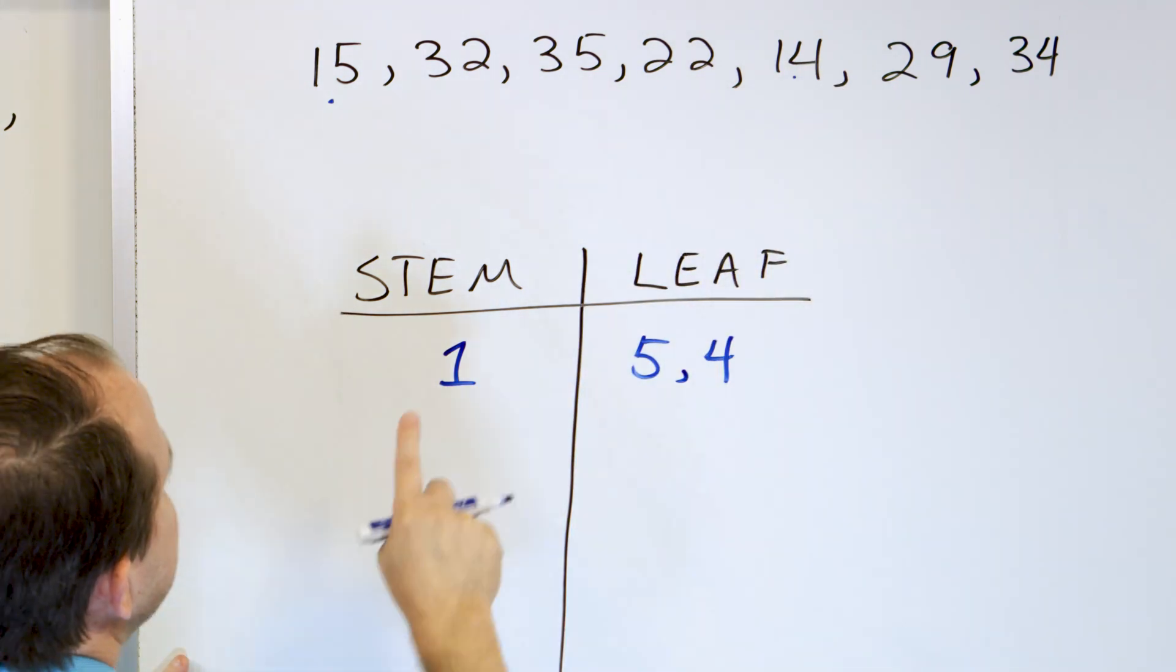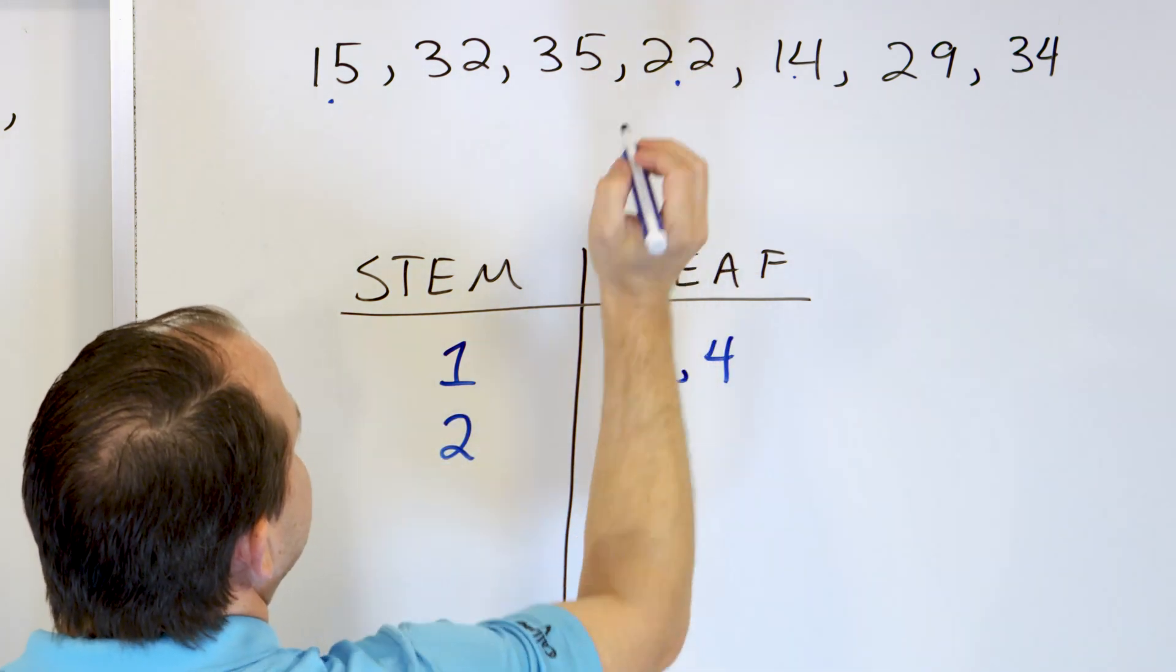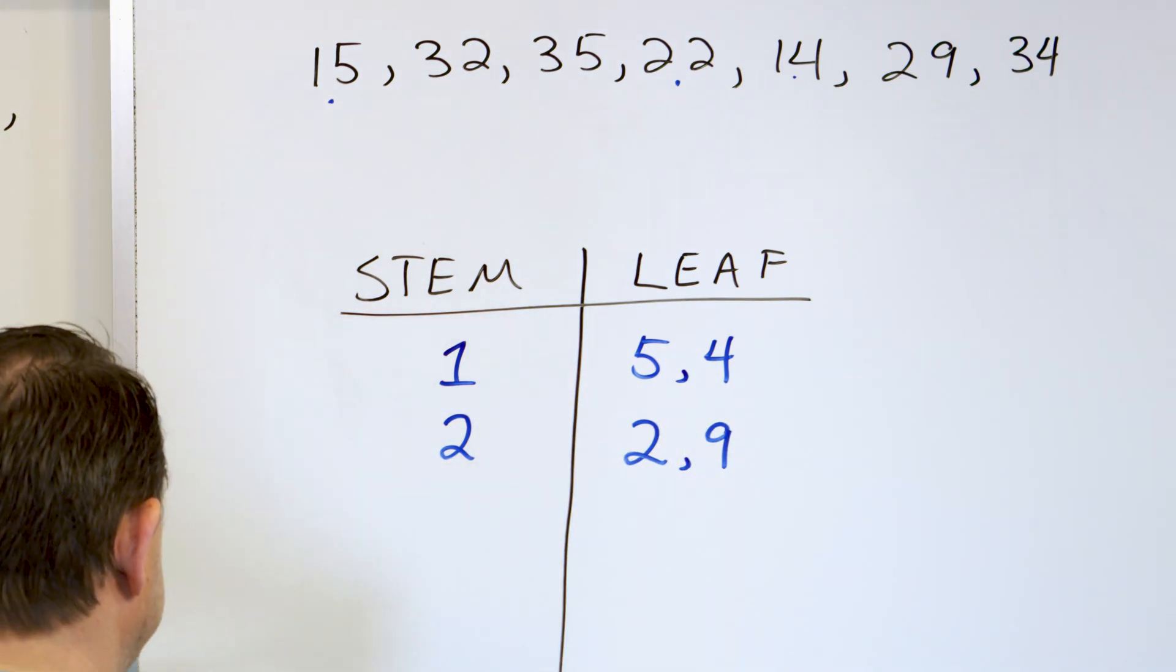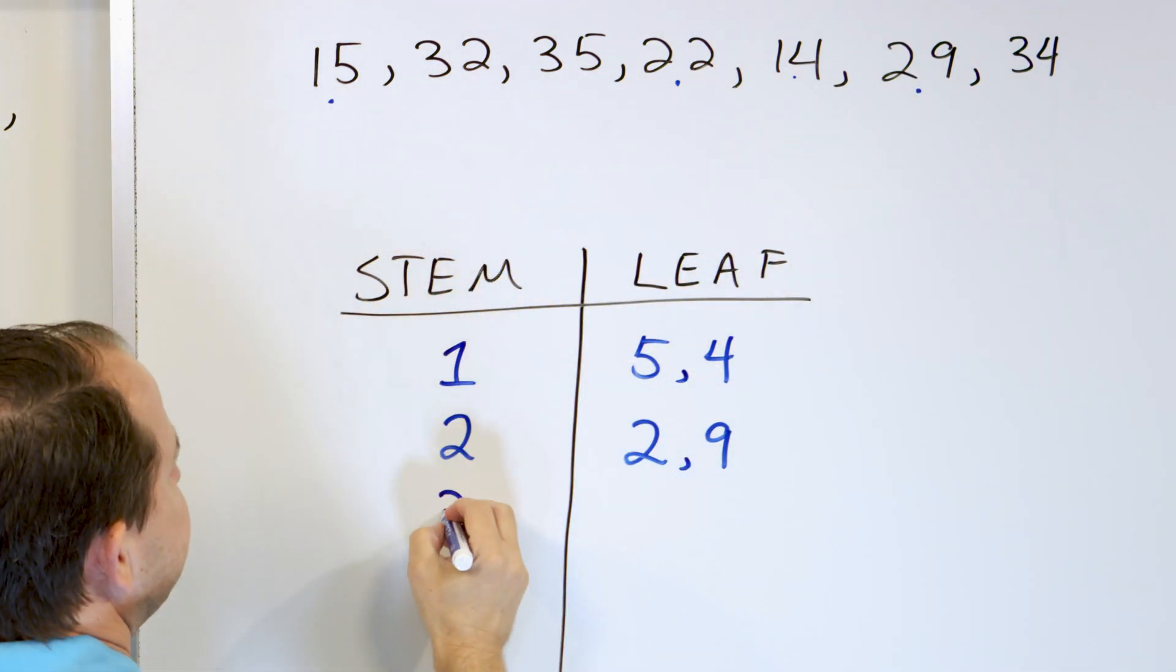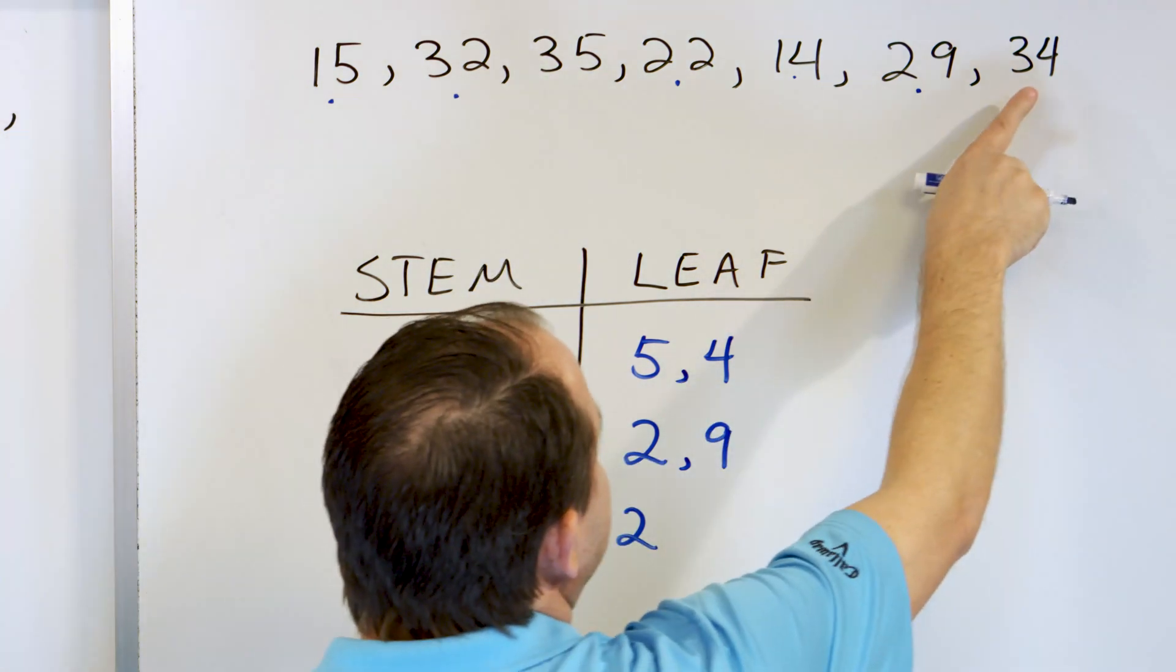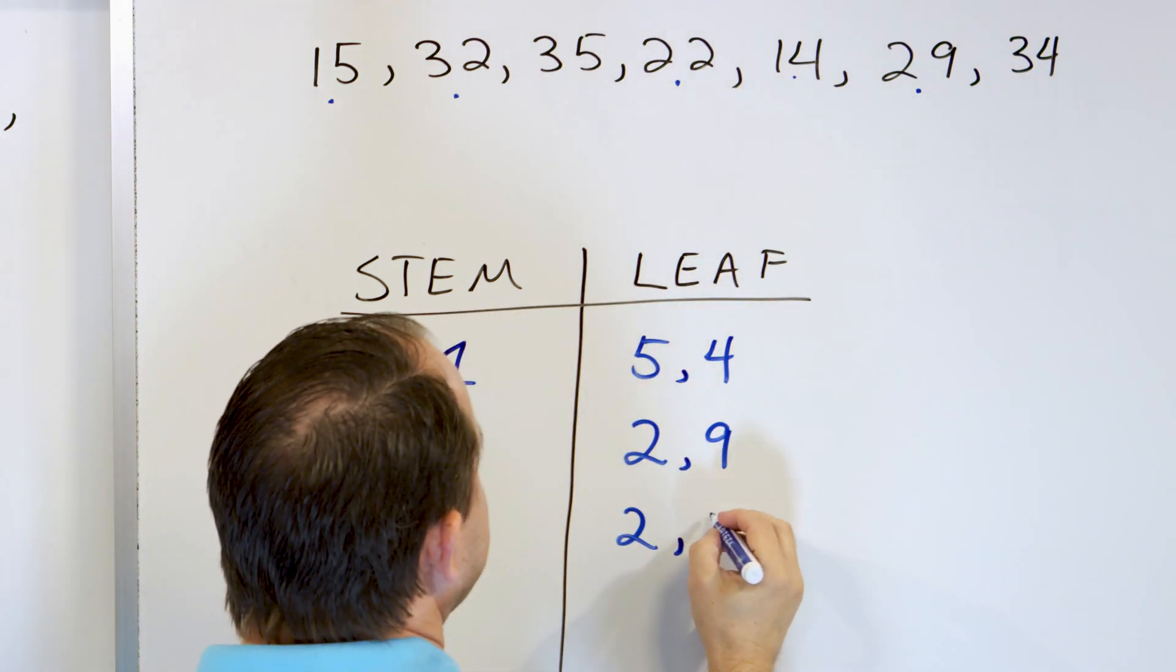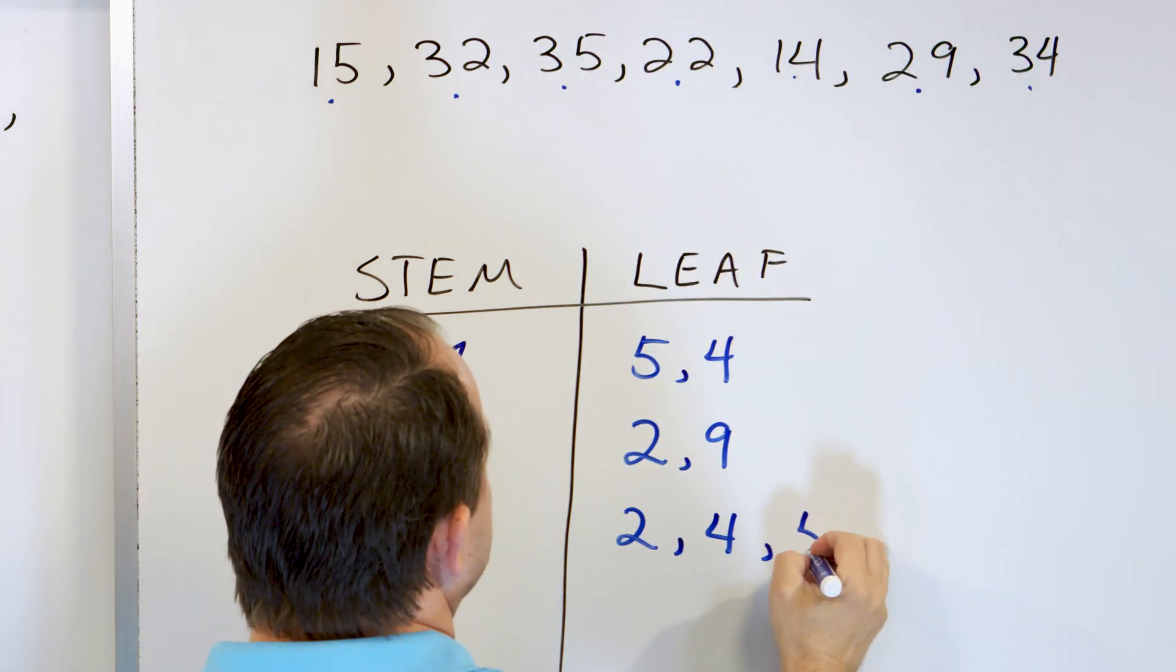So that takes care of that. Now in the 20s, we have 22. So the stem is 2 and the leaf is 2. And then we have 29. So the stem is 2 and the leaf is 9. So you read this as 22 and 29. Now in the 30s, we have 32. The stem is 3, the leaf is 2. We have 35. But we also have 34 right here. So we generally want to put the numbers in order if we can. So we'll put 34 right here. And then we'll round it out with 35 right here.